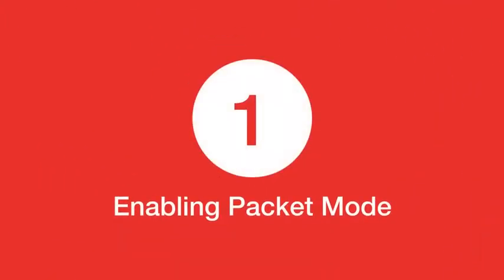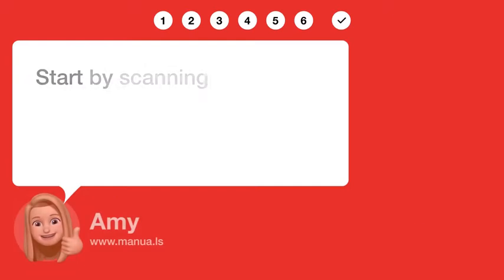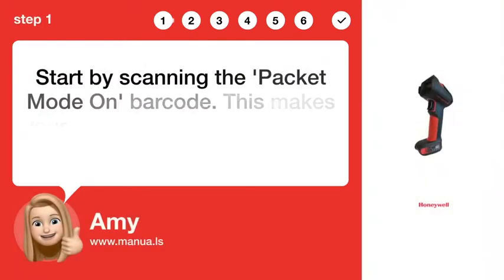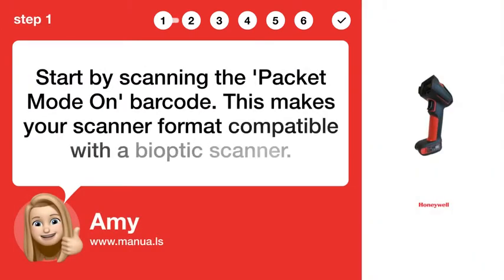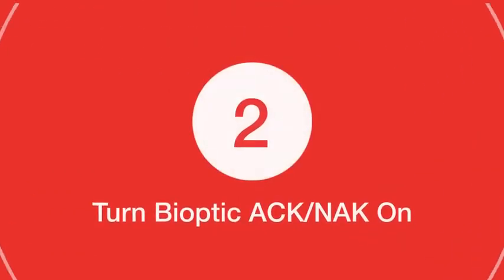Step 1: Enabling Packet Mode. Start by scanning the packet mode on barcode. This makes your scanner format compatible with a bioptic scanner.